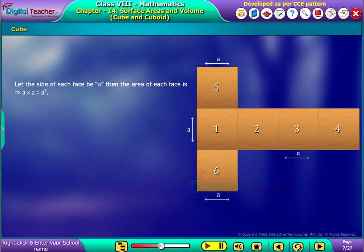Let the side of each face be A, then the area of each face is A into A, that equal to A square.